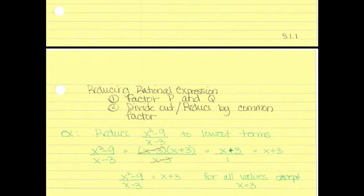The most difficult part is that factors must be exactly alike — x plus 2 must match x plus 2. Let's reduce x squared minus 9 over x minus 3. The numerator factors into x minus 3 times x plus 3. The denominator stays as is. They share x minus 3, which divides out, leaving x plus 3 over 1, or simply x plus 3.